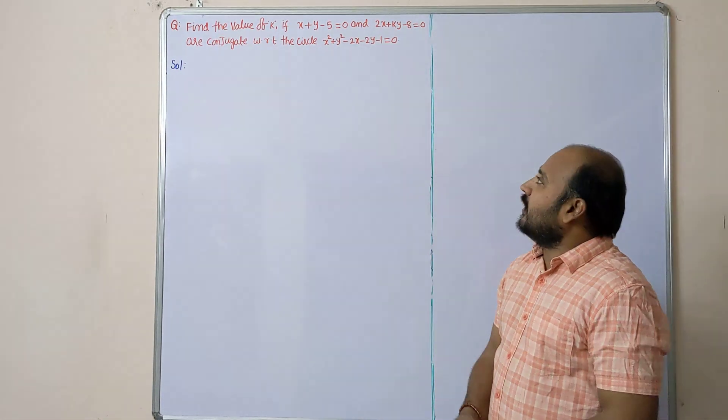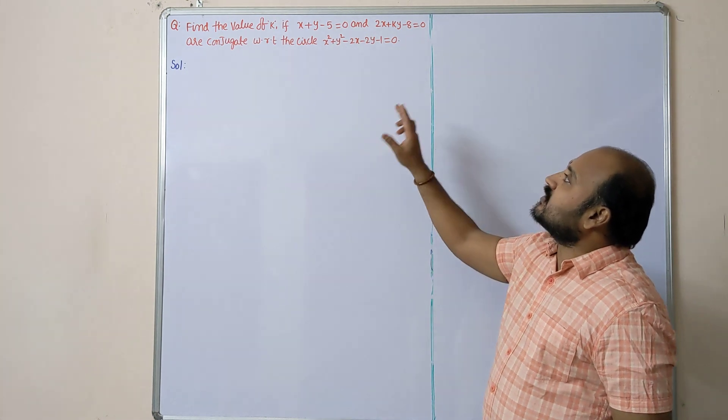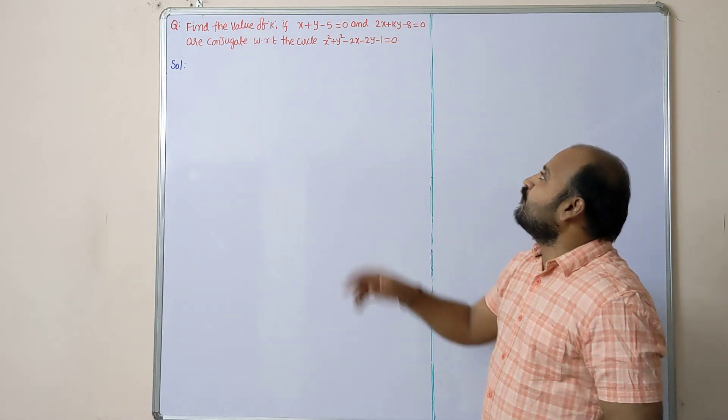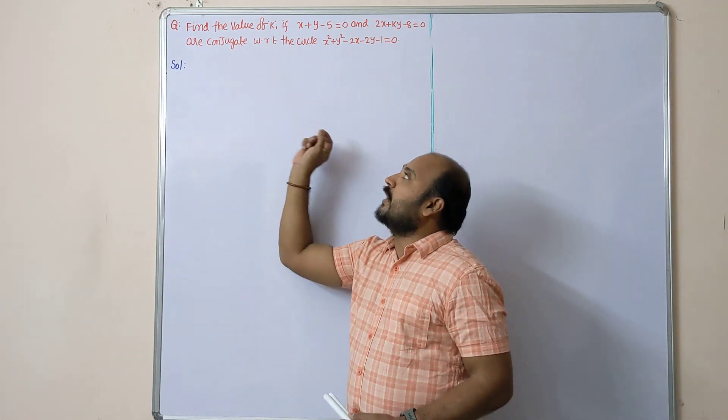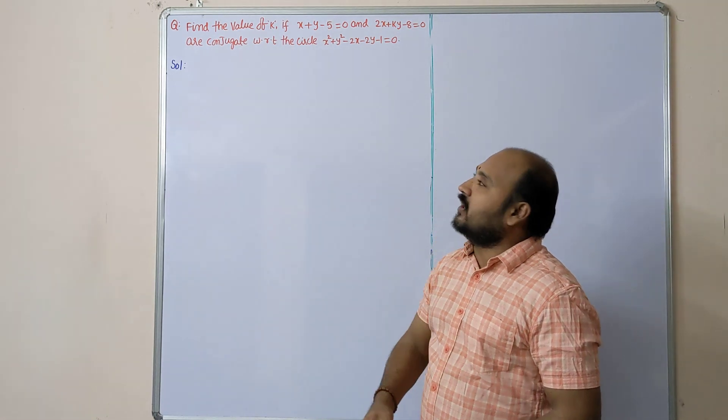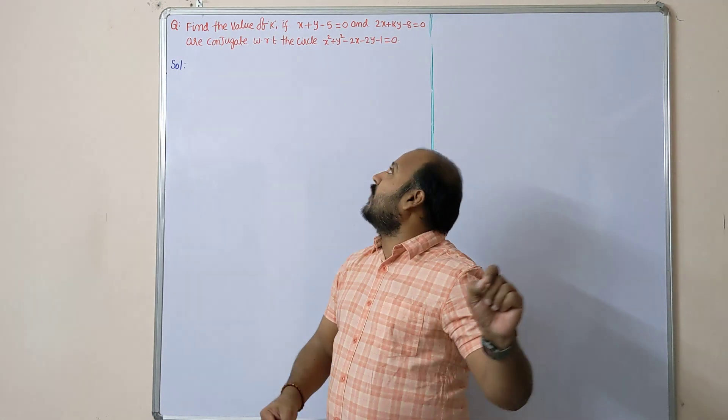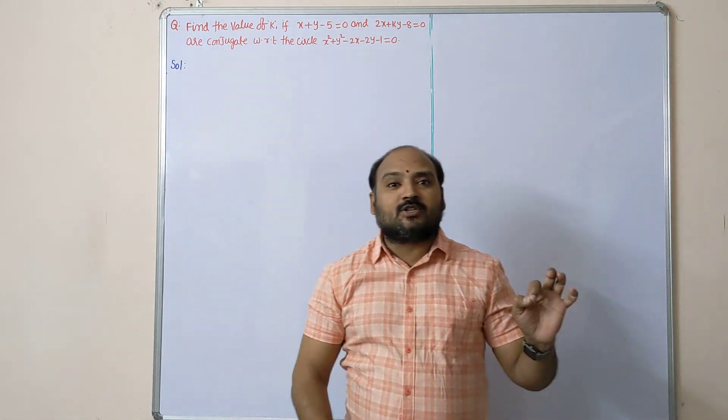Find the value of k if x + y - 5 = 0 and 2x + ky - 8 = 0 are conjugate with respect to the circle x² + y² - 2x - 2y - 1 = 0.